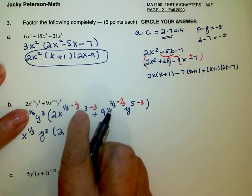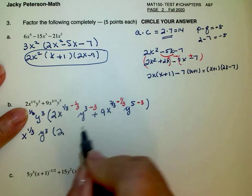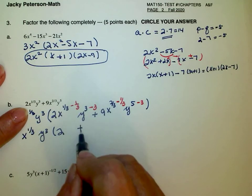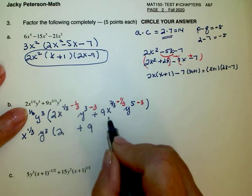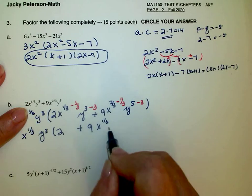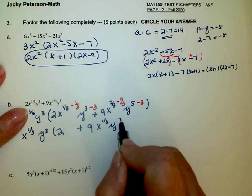One-third minus one-third is 0, so he's gone. Three minus three is 0, so he's gone. x to the two-thirds minus one-third is x to the one-third. y, five minus three is two.